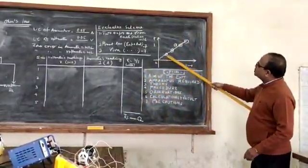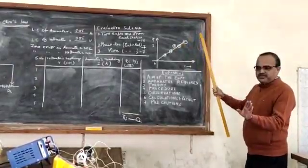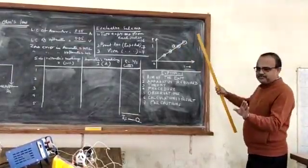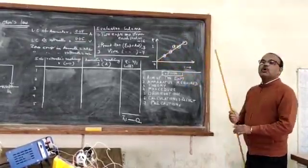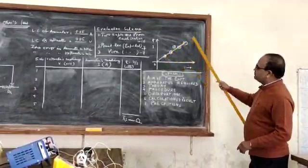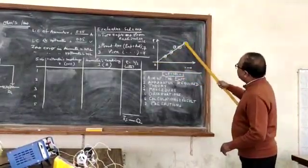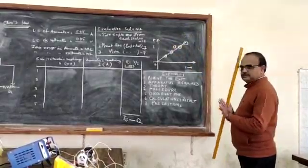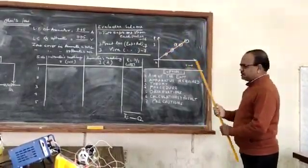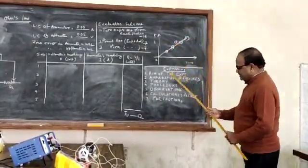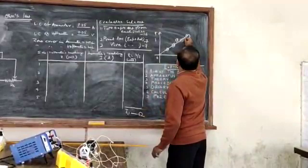You all know that this graph must pass through at least three to four of the five points, and it should also pass through the origin, as shown in the figure. In the figure I have shown that it is passing through four points, and one point has been eliminated — it is not passing through that point.